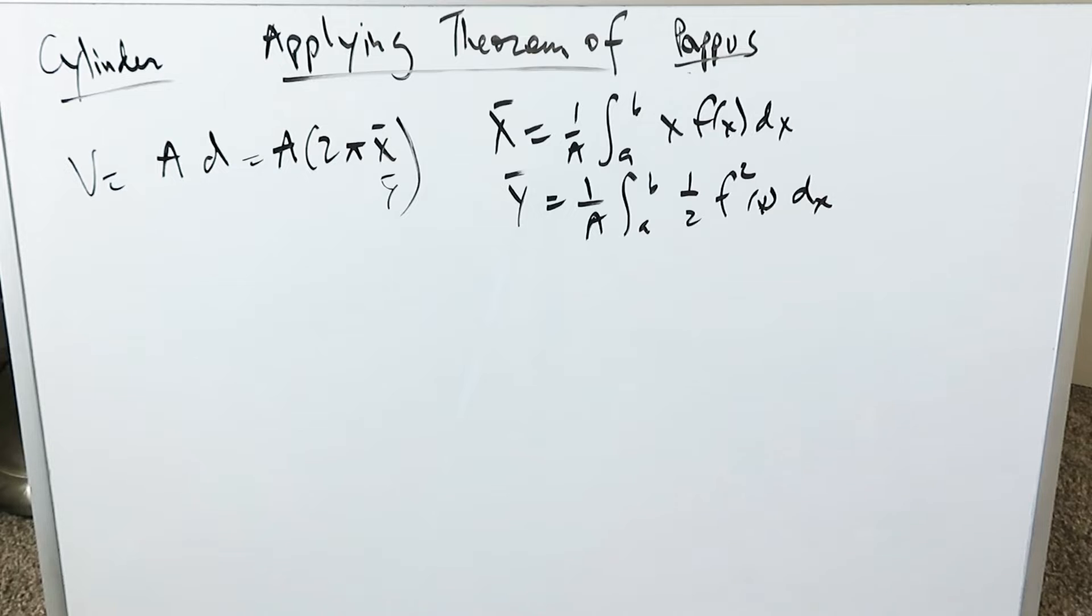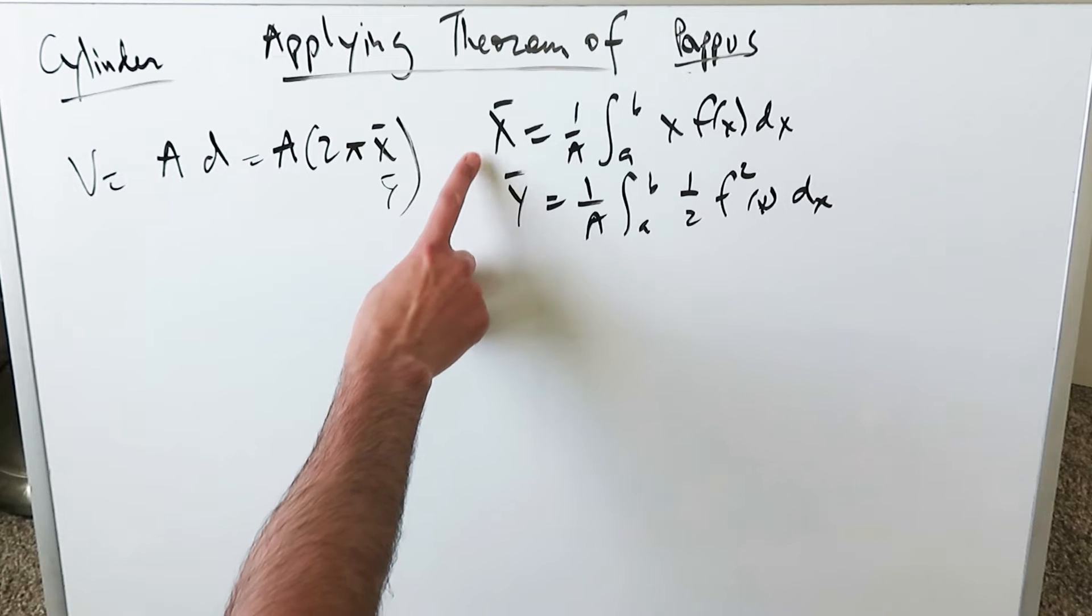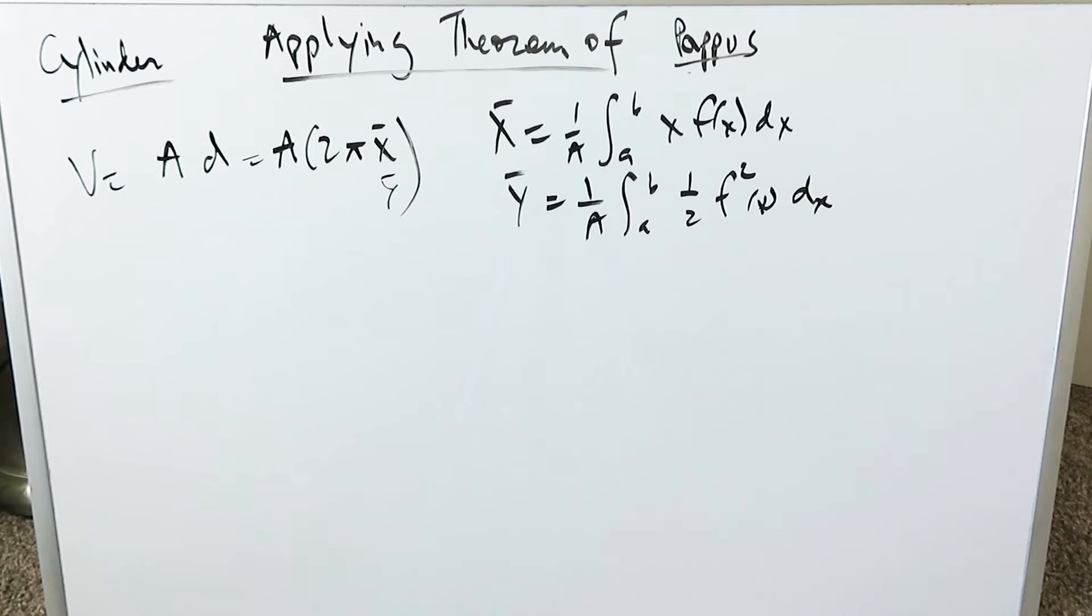In this video we're applying the theorem of Pappus. Hopefully I'm pronouncing that name correctly. We're applying that theorem to the development of the volume of a cylinder. I have the equations here for the x and the y value of a centroid.